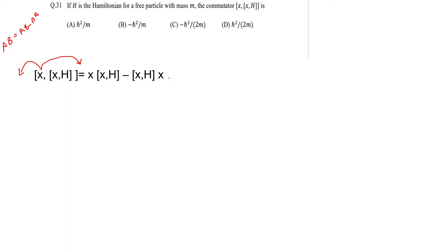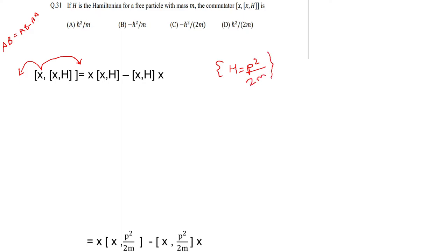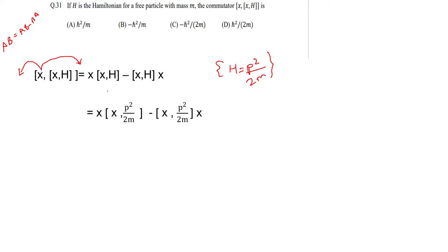Now you all should know the value of H. The value of H is nothing but p²/2m. So we are going to substitute this value p²/2m, and this is what we get: x[x, p²/2m] − [x, p²/2m]x.